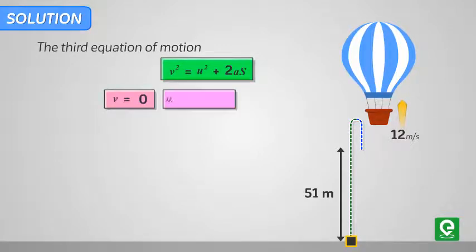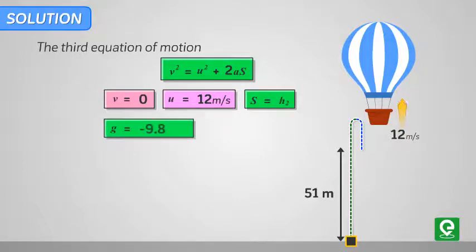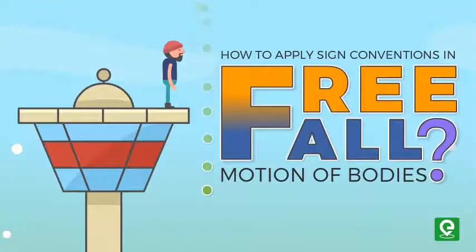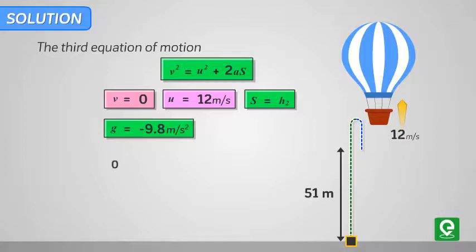Here final velocity is 0, initial velocity is 12 meters per second, displacement is h2, and acceleration due to gravity is -9.8 meters per second squared. In case you are confused about the application of signs to different variables, please watch the video on how to apply sign conventions in free-fall to understand this better. So h2 = u²/2g.